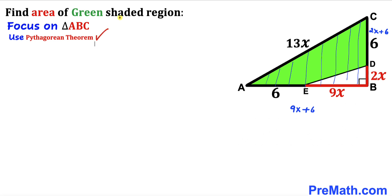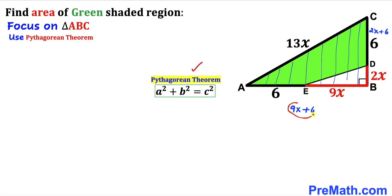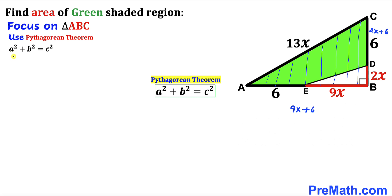We are going to apply the Pythagorean theorem on this triangle: A² + B² = C². Our two legs are (9x + 6) and (2x + 6), and the hypotenuse is 13x. So we have (2x + 6)² + (9x + 6)² = (13x)².